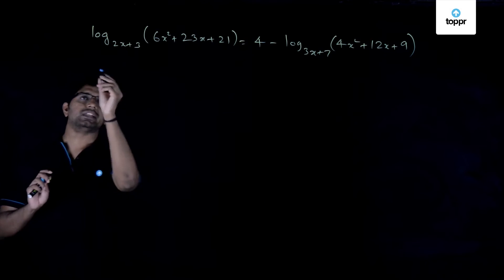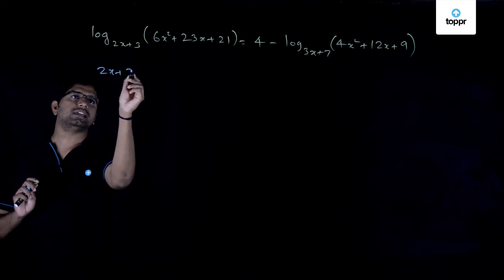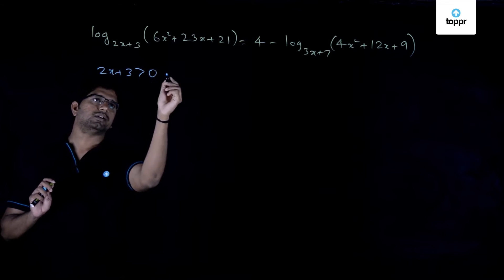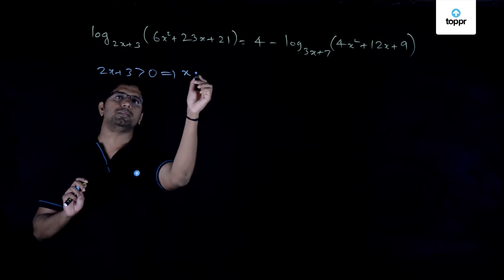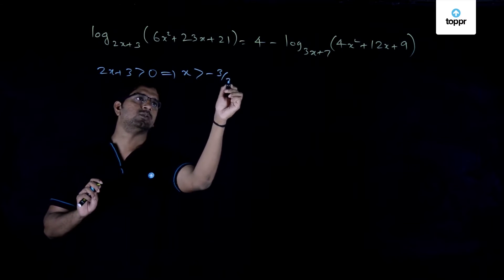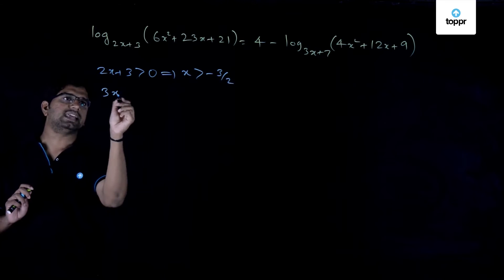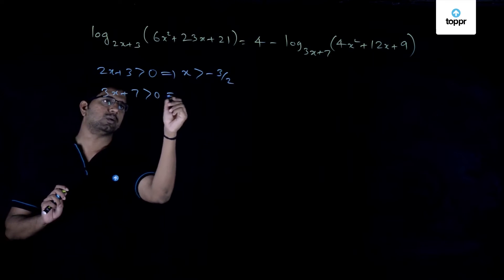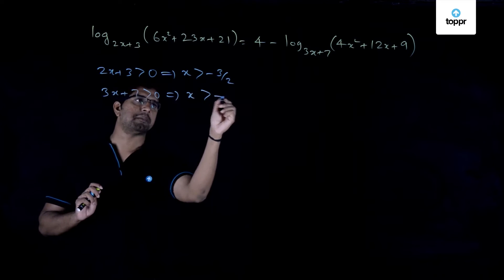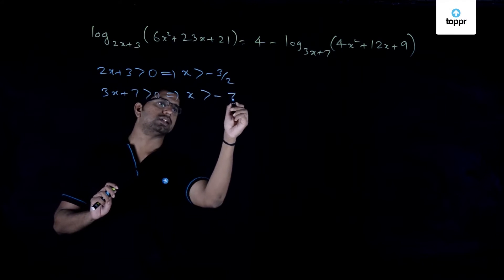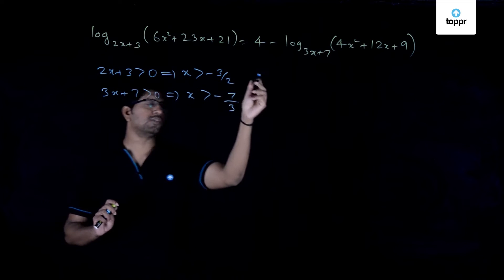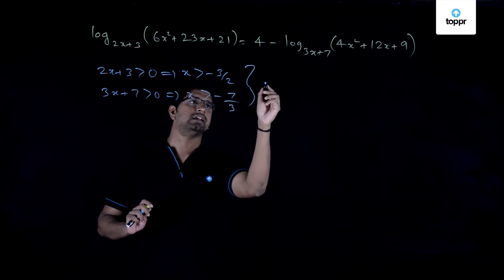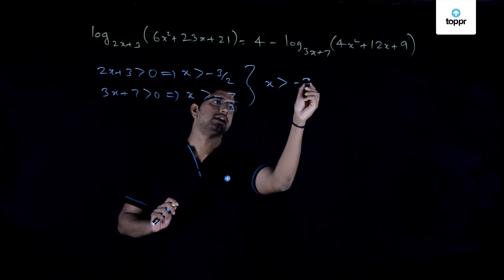So here that means that 2x+3 should be greater than 0, which implies x should be greater than -3/2. And further, 3x+7 greater than 0, which implies x is greater than -7/3. So if you put both these together, you can write x should be actually greater than -3/2.